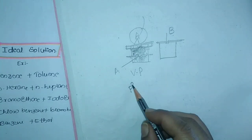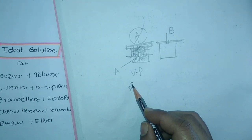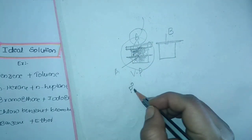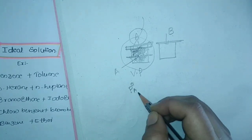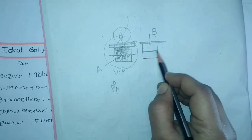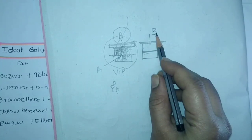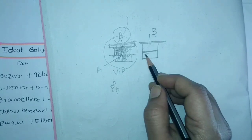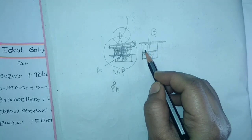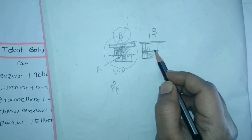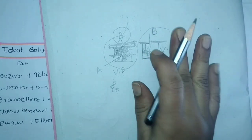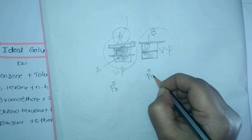P° (P-naught) means it is for the pure solvent — since we have only component A in the container, it is a pure solvent. So P°A is the partial pressure or pressure of pure component A. Similarly, the same rule applies for component B: it is also a volatile solvent, it starts evaporating, hits back the surface with the same pressure, and that pressure exerted is known as the vapor pressure of pure component B, which we call P°B.